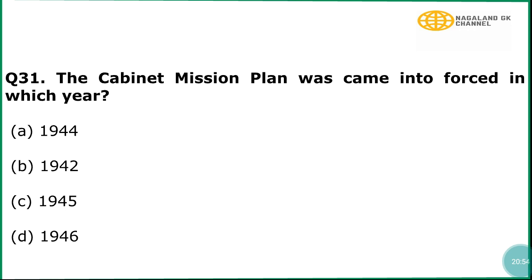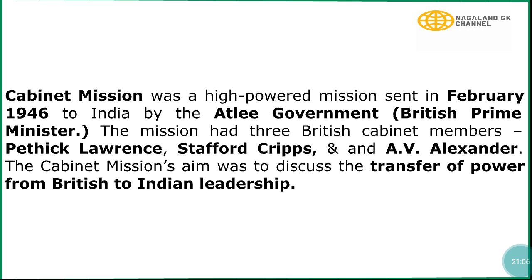Question number 31: The Cabinet Mission Plan came into force in which year? The correct answer is option number D, 1946. In explanation, the Cabinet Mission was a high-powered mission sent in February 1946 to India by the Attlee government, British Prime Minister. The mission had three British Cabinet members: Pethick-Lawrence, Stafford Cripps, and A.V. Alexander. The Cabinet Mission's aim was to discuss the transfer of powers from British to Indian leadership.